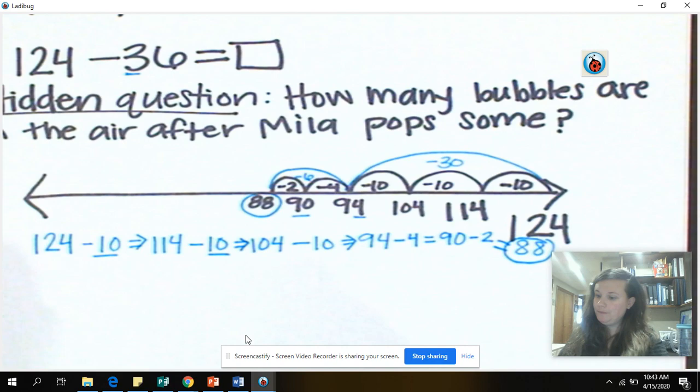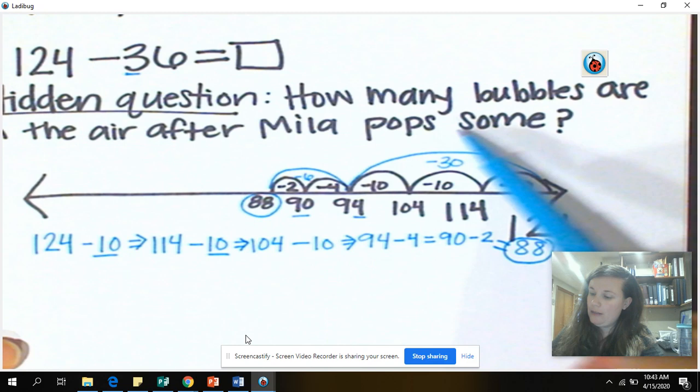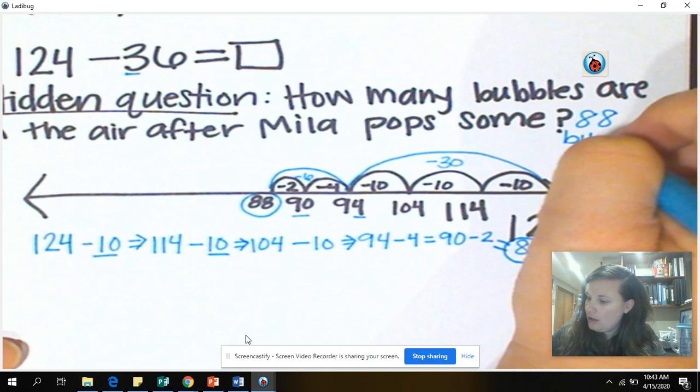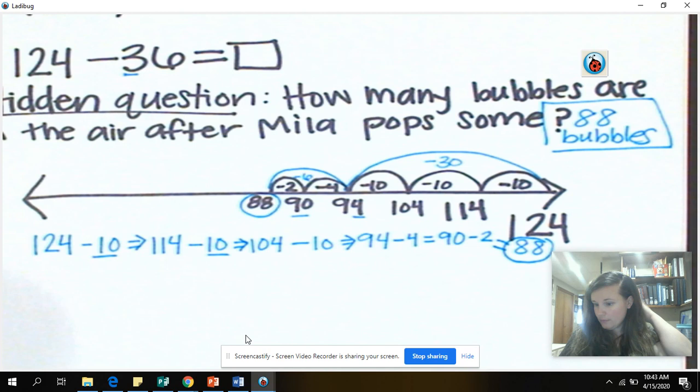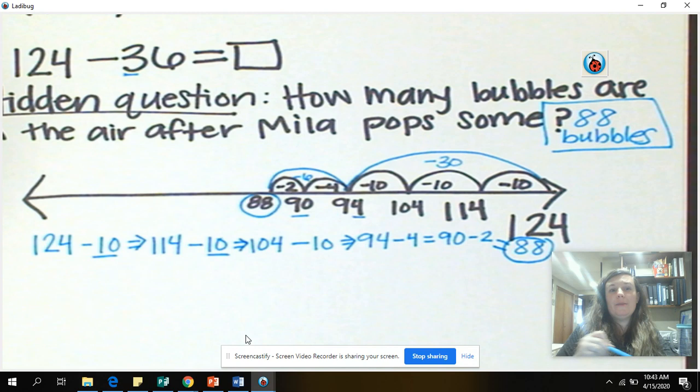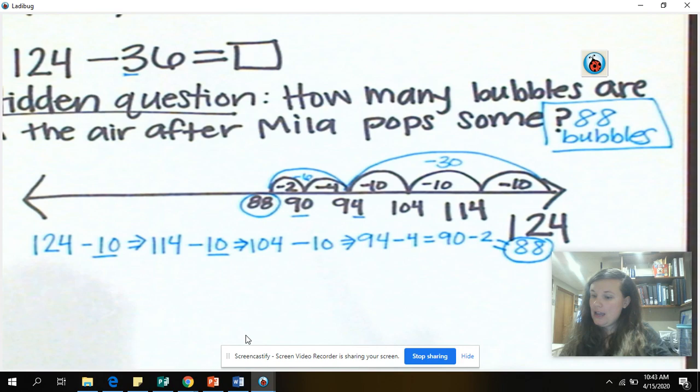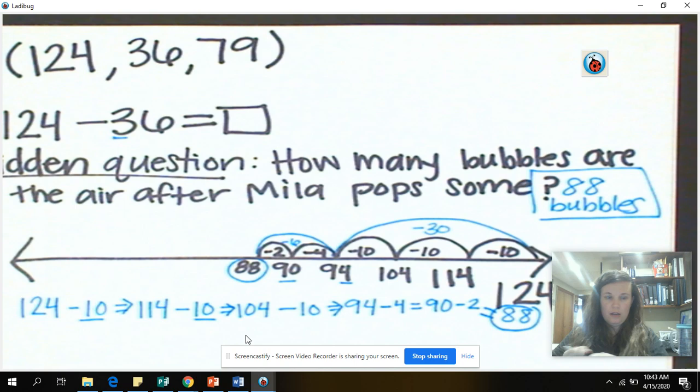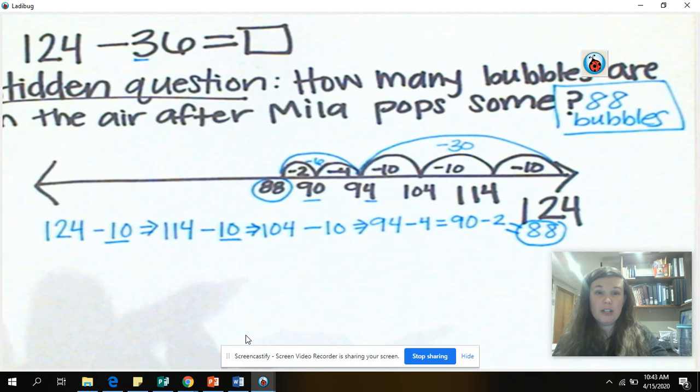So that is our hidden question. How many bubbles are in the air after Mila pops some? 88 bubbles. But that's not the question of the story. The question of the story reads, how many bubbles are left in the air? Because if you remember, I then blew more bubbles in the air. Because what 3-year-old doesn't love to keep popping bubbles over and over and over again? So our next number here is 79. Let me read the story again because we can kind of get lost in two-step problems.